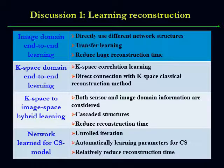In the discussion, we can see that different types of learning reconstructions have different properties. Generally, image-domain end-to-end learning is better at removing image noise and artifacts, and can directly use different network structures and transfer learning techniques from natural imaging areas. K-space-based learning is better at keeping high-frequency information, namely details and fine structures, with strong connections to classical k-space-based reconstruction methods. K-space-to-image-based learning can achieve a better trade-off between removing artifacts and preserving key details. Networks learned for CS models normally have better theoretical explanations.